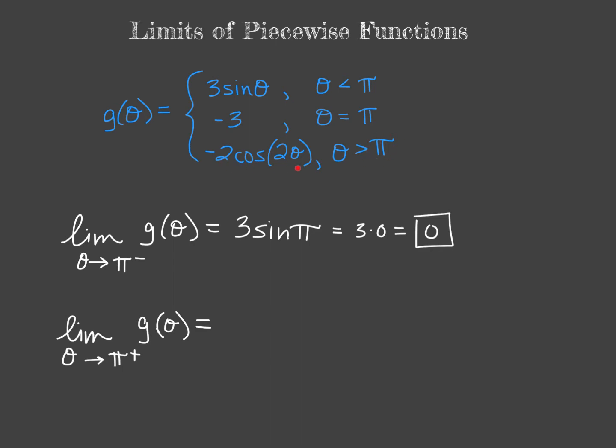So we're going to do the same thing. We're going to also use direct substitution except now we're just plugging it into the bottom function. So we'll have negative 2 cosine of 2 pi. The cosine of 2 pi is 1, so we'll have negative 2 times 1 and therefore our right-sided limit is negative 2.